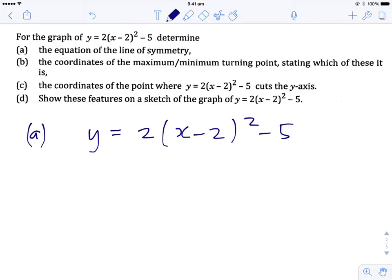But let's do it in this order. The equation of the line of symmetry, since we've got moving 2 across to the right, the equation of the line of symmetry is x equals 2. So the whole thing is shifted from being at 0, it's shifted 2 across to the right.